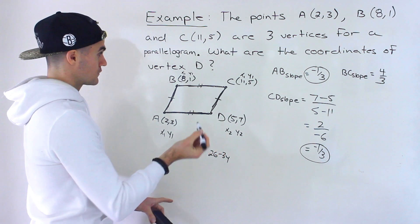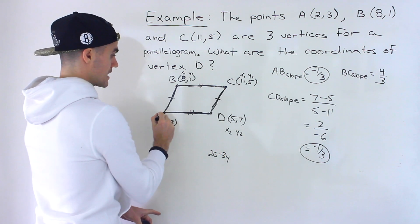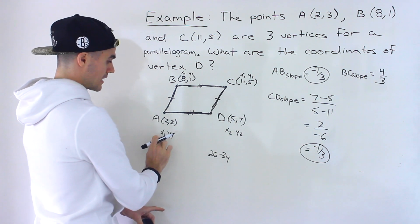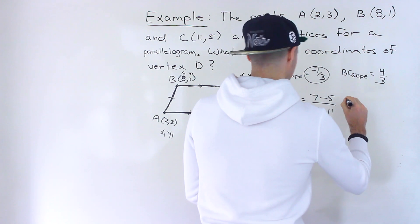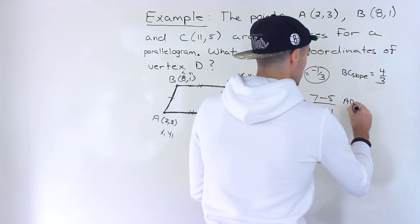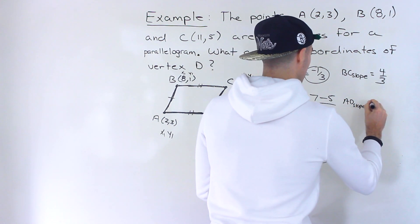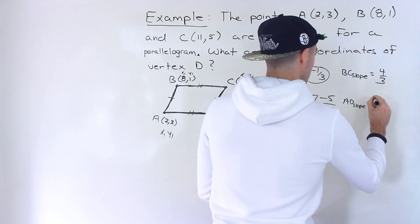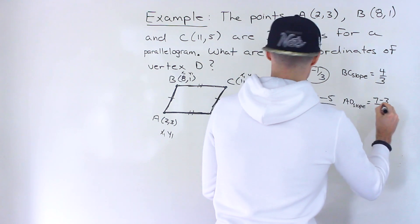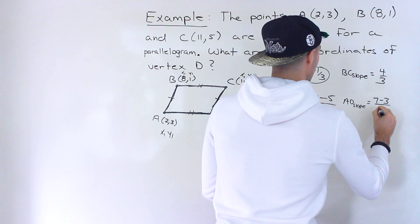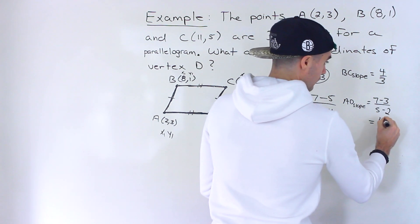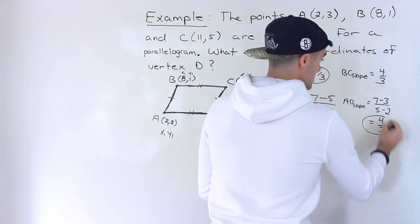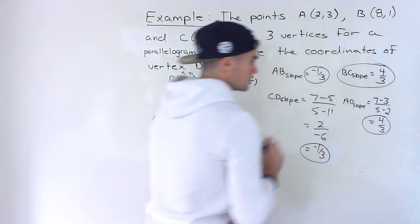And then we have to show that the BC slope is the same as the AD slope. So we already have these labeled X1, Y1, X2, Y2. So the AD slope is going to be 7 minus 3 over 5 minus 2, which indeed would give us 4 over 3, which is the same slope as the BC slope.